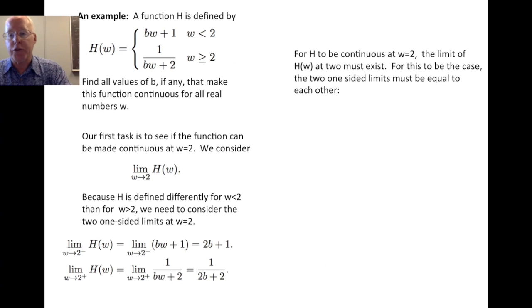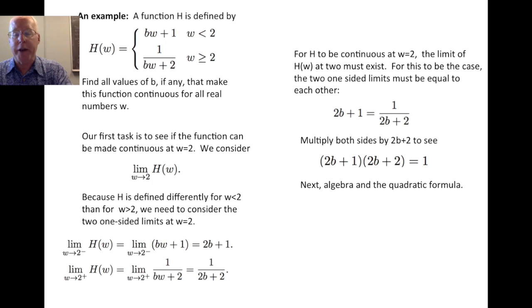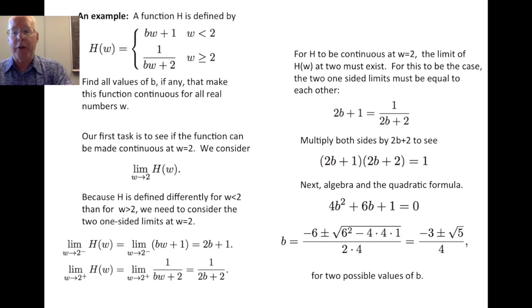Now for h to be continuous at w equals 2, the limit of h of w at 2 must exist. For this to be the case, these two one-sided limits must be equal to each other. So if we want to force h to be continuous at 2, we need to have the left-hand limit 2b plus 1 equal to the right-hand limit 1 over 2b plus 2. Now we're going to find the values of b that make this true by solving this equation algebraically. So we'd start by multiplying both sides by 2b plus 2 to get this quadratic: 2b plus 1 times 2b plus 2 equals 1. And we now use some algebra and the quadratic formula to solve this result. The algebra reduces this to 4b squared plus 6b plus 1 equals 0.